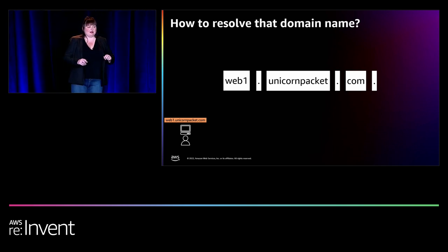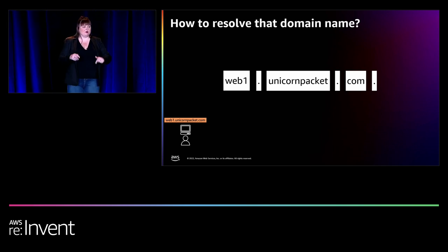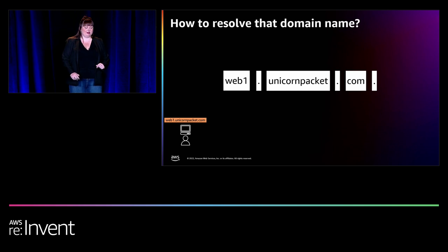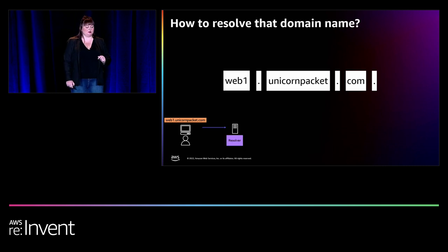Non-authoritative nameservers don't contain the original zone files. However, they may point to another server or serve up cached content. So you sat there on a laptop, you open up a web browser, type in web1.unicornpacket.com, hit enter. First thing that's going to happen is the local cache is checked — it doesn't know the answer — so it forwards on to a DNS resolver.